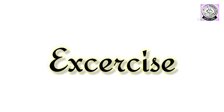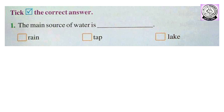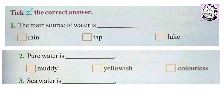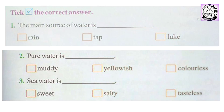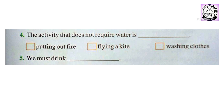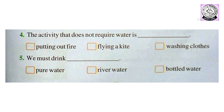Now it's time for your exercise. Take the correct answer. The main source of water is: rain, tap, or lake? Pure water is: muddy, yellowish, or colorless? Sea water is: sweet, salty, or tasteless? The activity that does not require water is: putting out fire, flying a kite, or washing clothes? We must drink: pure water, river water, or bottled water?